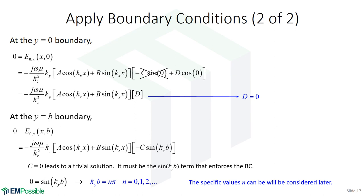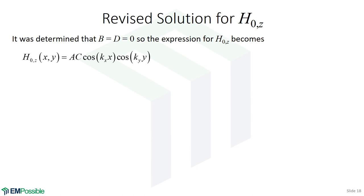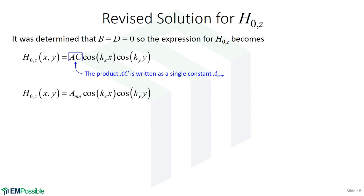We have two integers m and n, which is the origin of multiple modes. Our revised solution for H-naught-Z: we found B and D are both zero, so the general expression simplifies nicely. Constants A and C were never individually found, but A times C is just one unknown constant, which we write as A-sub-mn — the amplitude of the mode indicated by choice of m and n. We call these the (0,1) mode, (1,1) mode, etc. That's our general expression for H-naught-Z after applying boundary conditions.